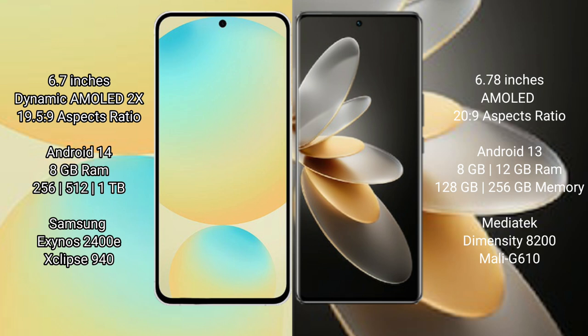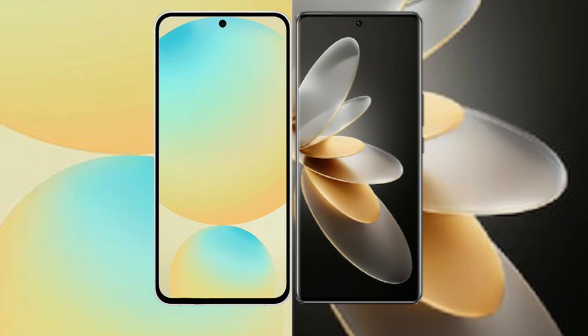The Samsung Galaxy S24 FE is powered by the Exynos 2400E processor with GPU Xclipse 940. The vivo V27 Pro comes with 8GB or 12GB RAM and 128GB or 256GB internal storage, powered by the MediaTek Dimensity 8200 processor with Mali-G610 GPU.